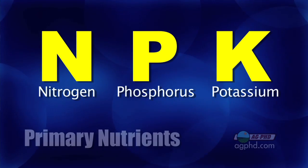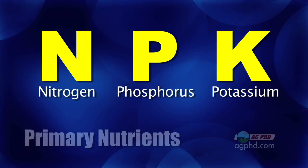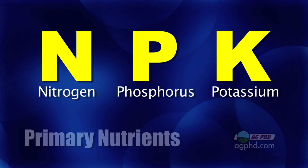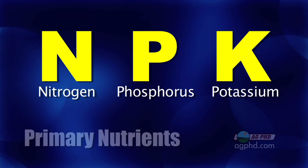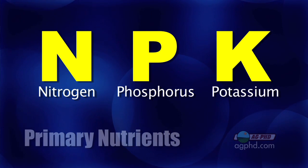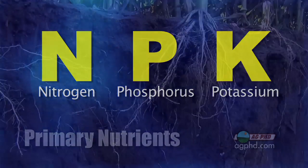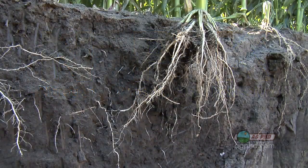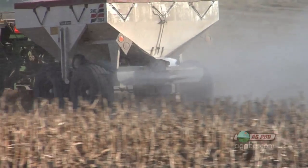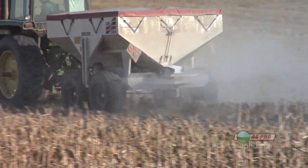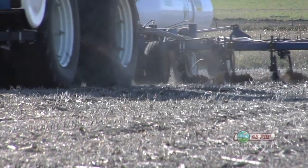Nitrogen is one of the primary nutrients, along with phosphorus and potassium. These are the three nutrients that our crops typically need the most of. But here's the problem with nitrogen: unlike phosphorus and potassium, which are relatively stable in soil, nitrogen can be unstable in soil because it can exist in a bunch of different forms.